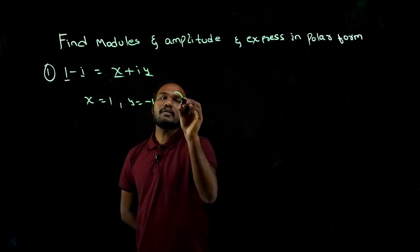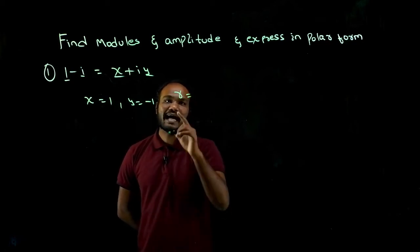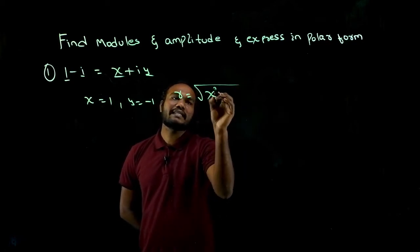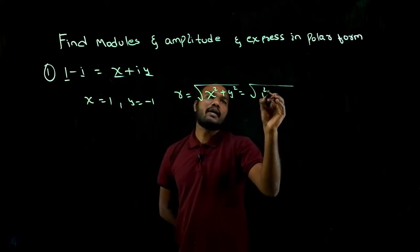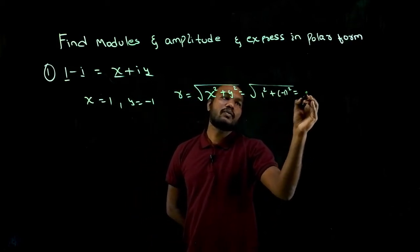We know the formula for finding the modulus: r equals root of x squared plus y squared. So if I substitute it, I'll get one squared plus minus one whole squared. That is root 2.